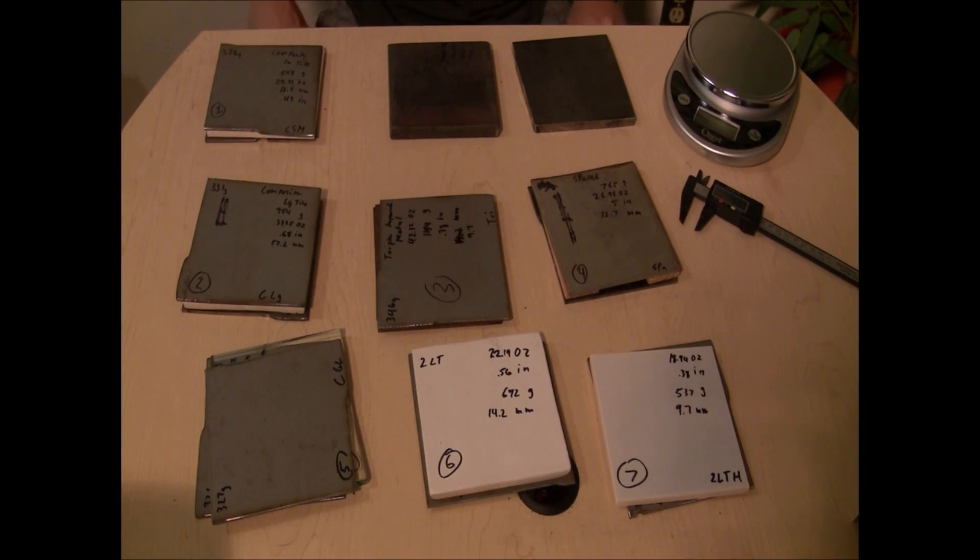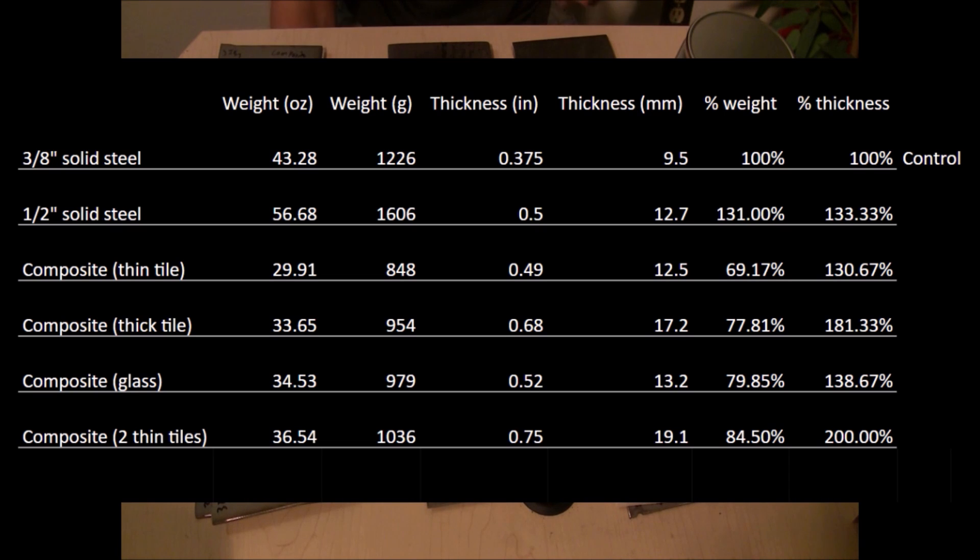I have previously and exhaustively weighed and measured all these targets and put the information into this handy chart. Here we can see how the different targets stack up against each other and our control. Very clearly, for similar thickness, there is considerable weight saving of composite armor compared to solid steel. If my hypothesis is correct, we will see the composite targets perform better than the solid steel at stopping 5.56. If you'd like to keep checking out this chart, pause the video now. Otherwise, let's get out to the range and get shooting.